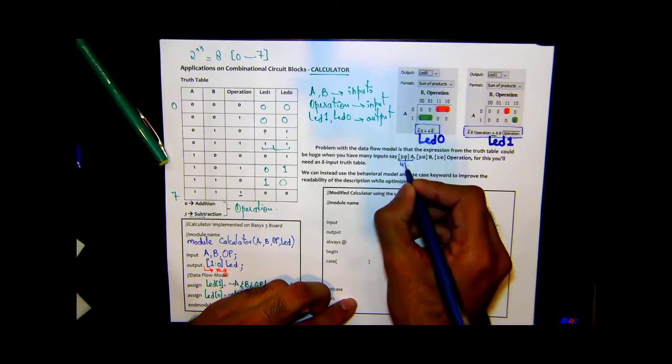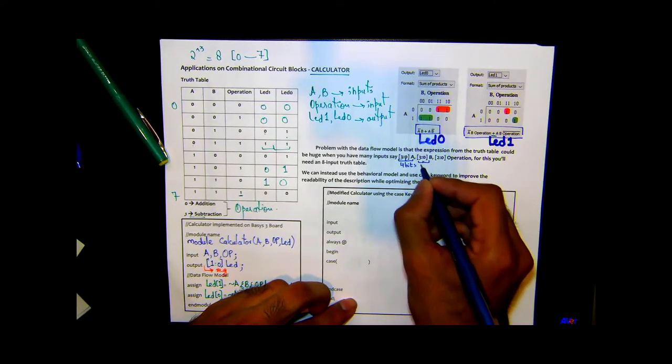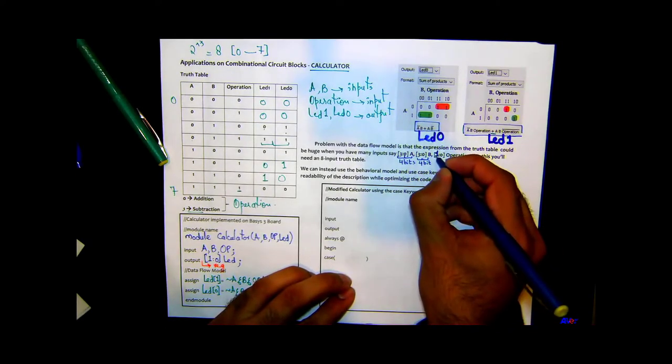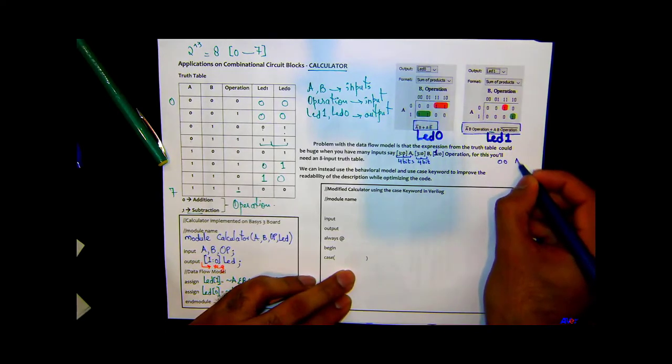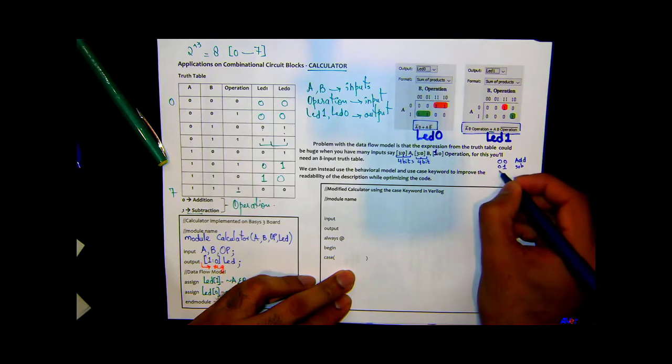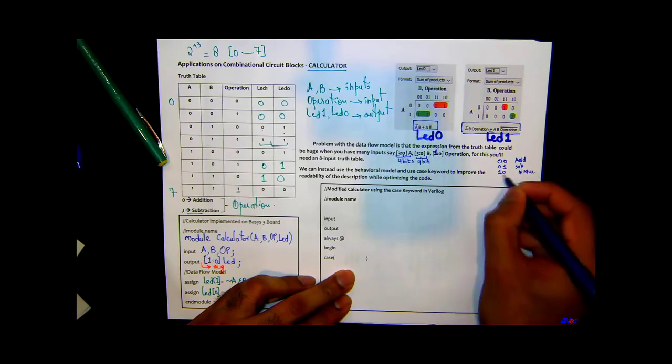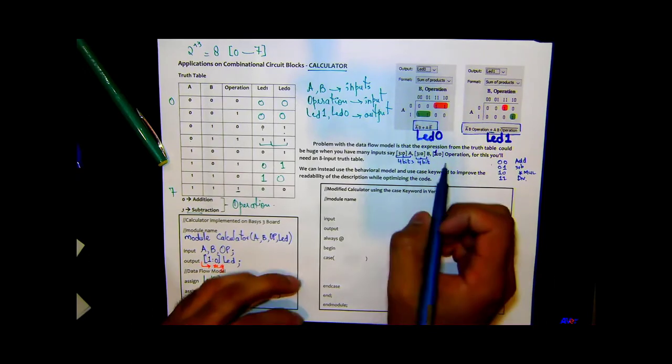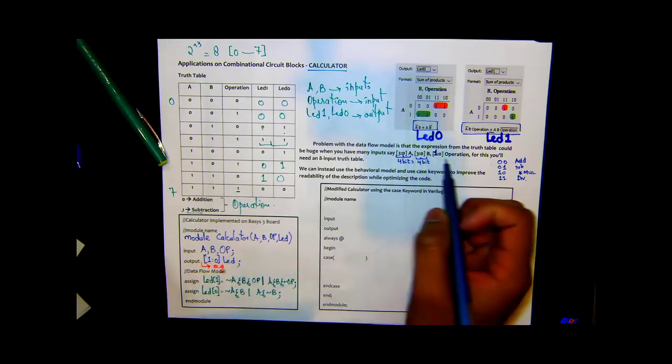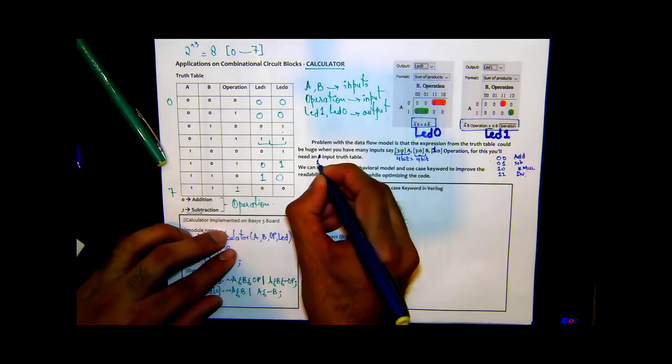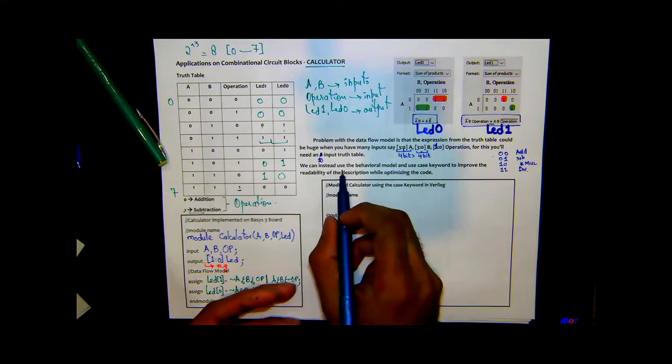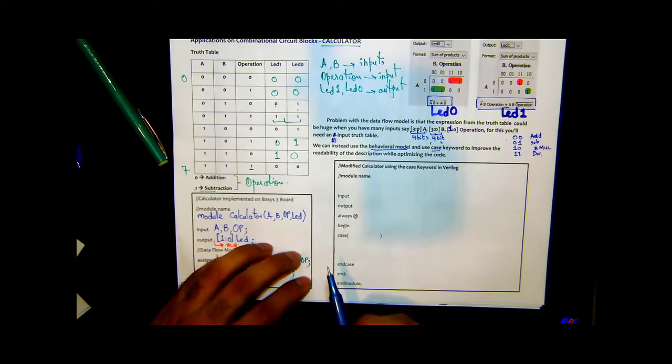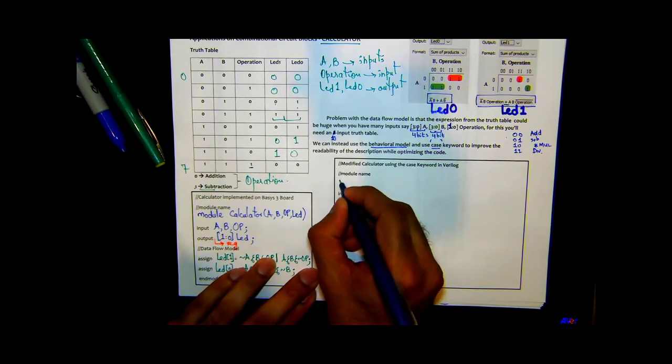That's what the next example is - it's the same example, we're just going to use this code, use this example but do it in a behavior model. So the problem with the data flow model is that the expression from the truth table could be huge when you have many inputs. Say three zero A, so you got four bits here, and then B also four bits, so you're adding two four-bit numbers, and then maybe I can do one here. So it could do zero zero could do add, zero one could do subtract, one zero could do multiplication, and then one one could do maybe division. And for this you will need a ten-input truth table, so four bits here, four bits here, and then two bits for operations, so we'll have ten bits here. This is going to be huge, right?